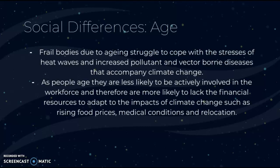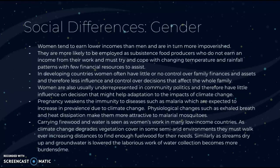There may also be social differences such as gender. Typically, women are more adversely affected by climate change in terms of risk and vulnerability. Women tend to earn lower incomes than men and are more impoverished overall. They are more likely to be employed as subsistence food producers who do not earn an income and must cope with changing temperature and rainfall patterns with few financial resources. In developing countries, women often have little to no control of family finances and assets, and are underrepresented in community politics, giving them little influence over adaptation decisions.